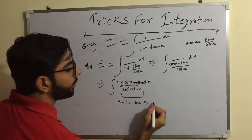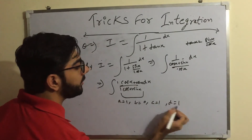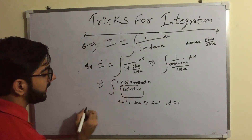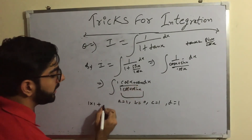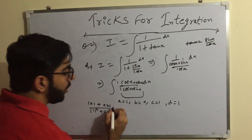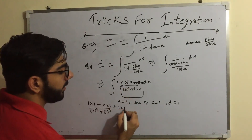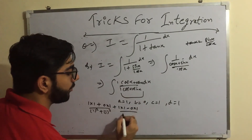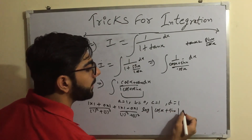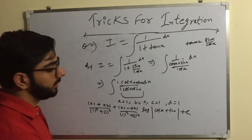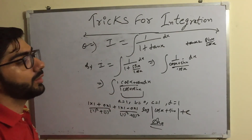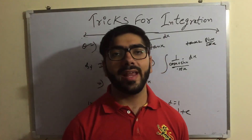Now this is in the form we need. Here a = 1, b = 0, c = 1, d = 1. Applying the same trick: a×c + b×d = 1×1 + 0×1 = 1, divided by 1² + 1² = 2; and cross term: a×d − b×c = 1×1 − 0×1 = 1, divided by 2, times log|cosx + sinx| + C. Please try to understand this trick — it is very important. Thank you for watching; if you like, please subscribe.